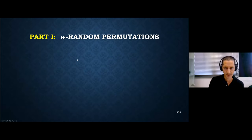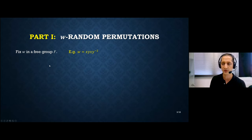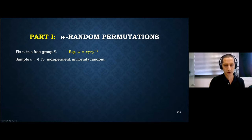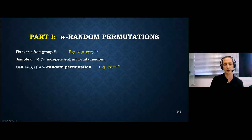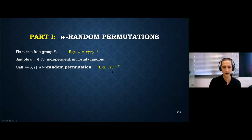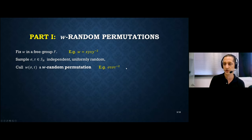We start with random permutations. We fix a formal word in the free group — for example, the word x, y, x, y to the minus 2. To get a W-random permutation, we sample independent uniform random permutations. In this example we need two of them, because the word W has two letters. We plug them into the word and evaluate, getting a random permutation in the symmetric group.